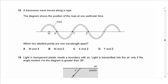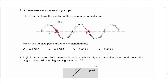Question 18: a transverse wave moves along a rope. Two labeled points are one wavelength apart if they are in identical positions on the wave. Points X and Z both lie at the undisturbed position with the same orientation — left side up and right side down — so the distance between X and Z equals one wavelength. The answer is C.